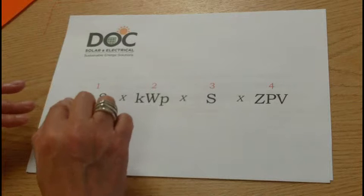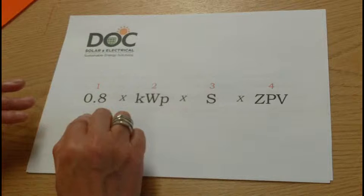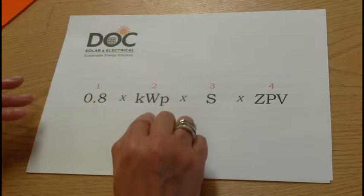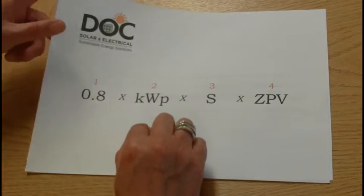Number 1 is a constant that allows the calculation to work across the whole of the UK. Number 2 is your kilowatts peak. I'm going to explain to you how you find out what your kilowatts peak is.